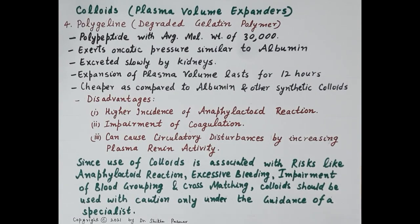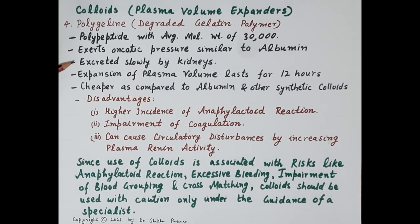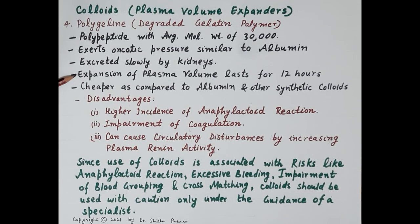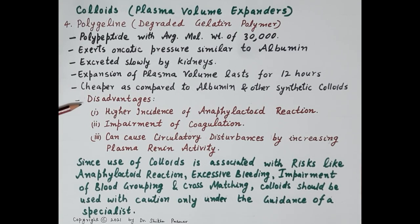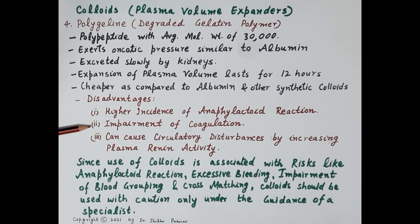The next artificial colloid is polygeline, a degraded gelatin polymer. It is a polypeptide with an average molecular weight of 30,000. It exerts oncotic pressure similar to human albumin and is excreted slowly by the kidneys. Expansion of plasma volume lasts about 12 hours, and it is cheaper compared to human albumin and other synthetic colloids. Disadvantages include higher incidence of anaphylactoid reactions compared to human albumin, and polygeline also causes impairment of coagulation.